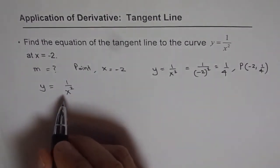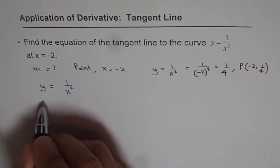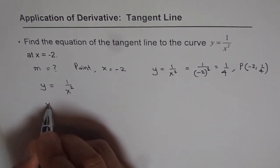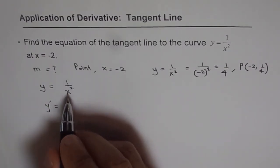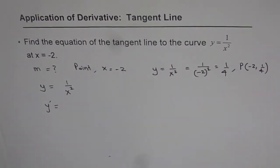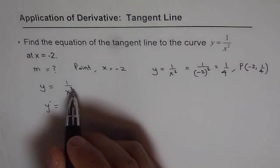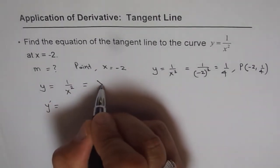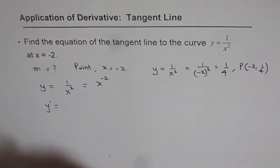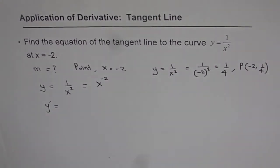So we will find the slope. The slope, dy/dx, also written as y-dash, both mean the same thing — they are different nomenclatures. So y-dash equals the derivative of this function. To find the derivative, it is good practice to rewrite the equation in power form — that is, write 1 over x squared as x to the power of minus 2. Now it becomes easier and we can apply the power rule.